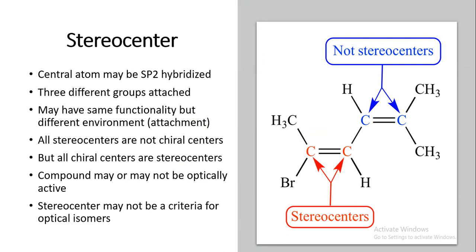A stereocenter is different from a chiral center. In a stereocenter, the atom may be sp2 hybridized with three different groups attached, which may have the same or different functionality. If they have the same functionality, the environment of the atoms may differ. All stereocenters are not chiral centers, but all chiral centers are stereocenters. Compounds with stereocenters may or may not be optically active. In geometrical isomers, there may be a stereocenter but the compound is not optically active.